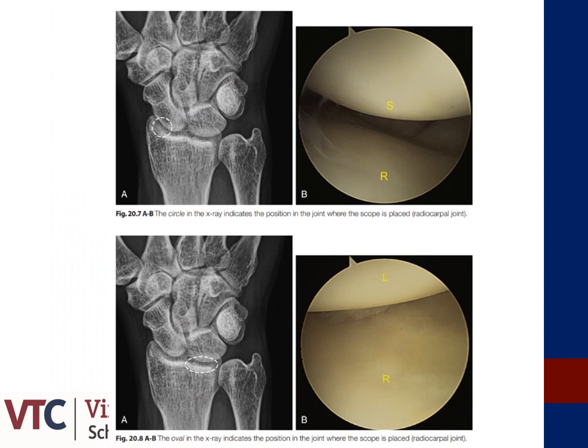These two pictures highlight the visualization provided by the 3-4 and 4-5 portals. The top photo demonstrates what is visualized in the 3-4 portal: you will see the proximal aspect of the scaphoid and the distal aspect of the radius, while the lower photo shows the visualization provided by the 4-5 portal, representing the proximal aspect of the lunate and again the distal aspect of the radius.